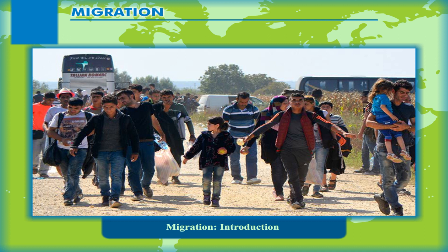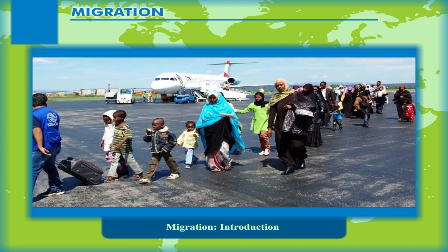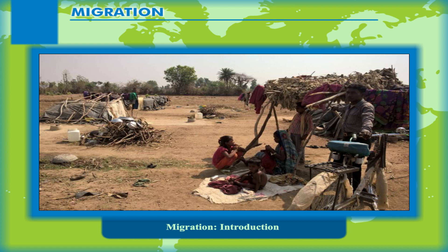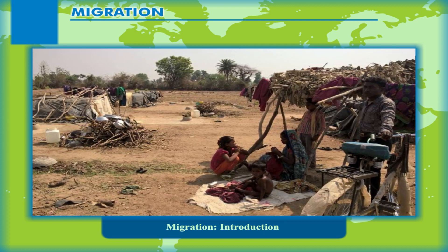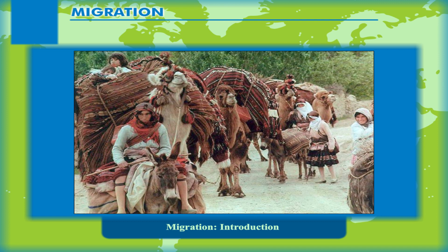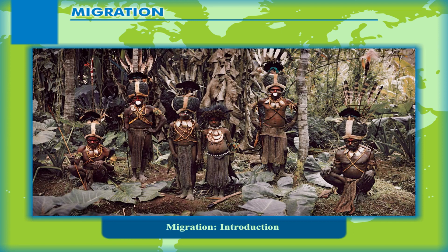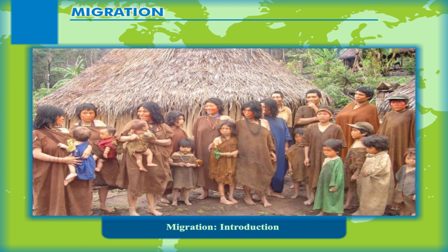The movement is often over long distances and from one country to another, but internal migration is also possible. This is the dominant form globally. Migration may be by individuals, family units or in large groups. Nomadic movements are normally not regarded as migrations, as there is no intention to settle in the new place and because the movement is generally seasonal.